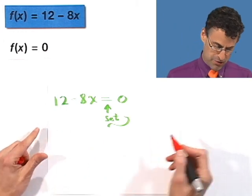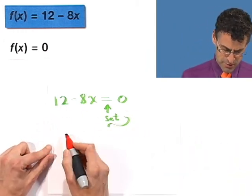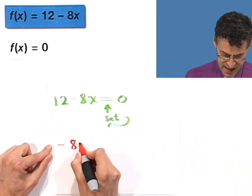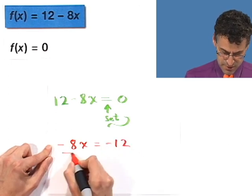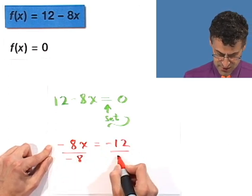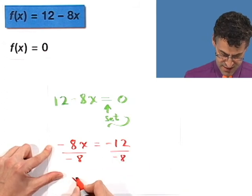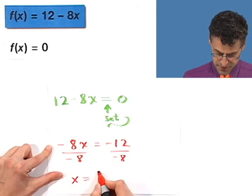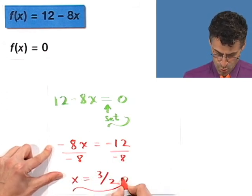Or you can move the 8x over, whatever you want. I'll subtract 12 from both sides. So I see 8x equals negative 12. Divide both sides by negative 8, and I see x equals a positive 3 halves. Voila.